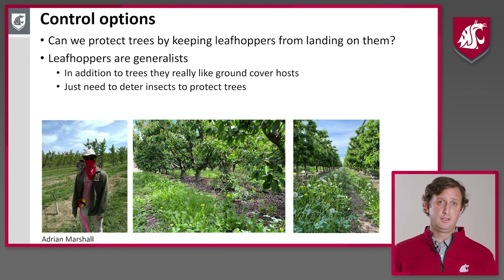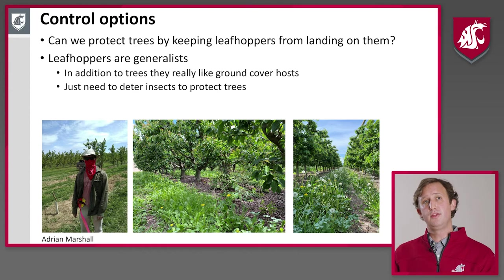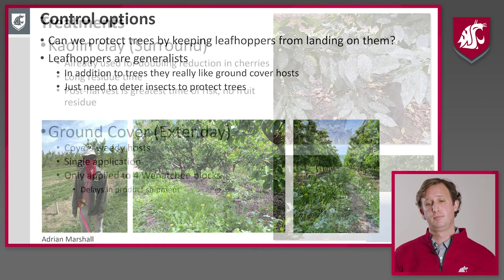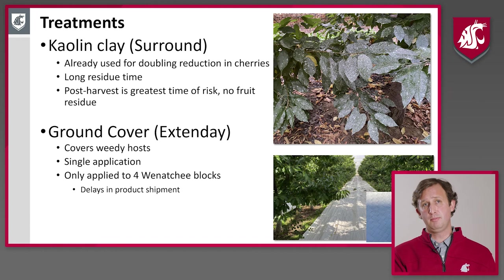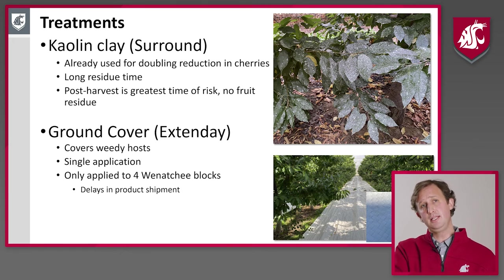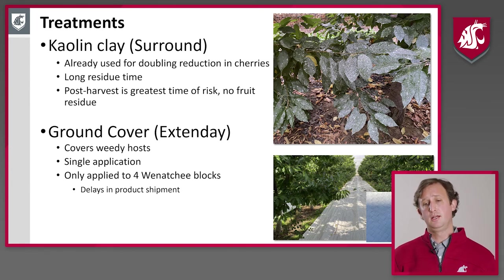We know leafhoppers are generalists, so we don't necessarily have to kill all of them — we just have to get them to feed somewhere else. We evaluated two treatments. One is kaolin clay, or Surround, which is already used in some orchards, has a long residual time, and because we're focusing on post-harvest application when leafhoppers are abundant and phytoplasma levels are high, we don't have to worry about clay sticking to fruit because the fruit are gone. The other treatment was ground cover fabric, or Extendate, which covers alternative host plants so there's nothing else for them to feed on. You put it out once, leave it for the season, and can use it for multiple years. Due to COVID we were only able to apply these to four blocks in Wenatchee, but we did conduct evaluations.